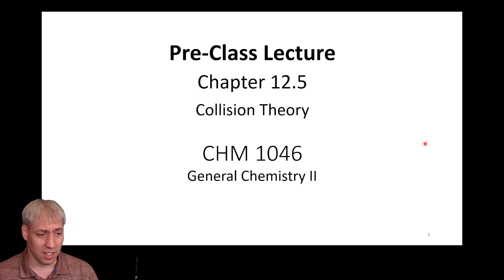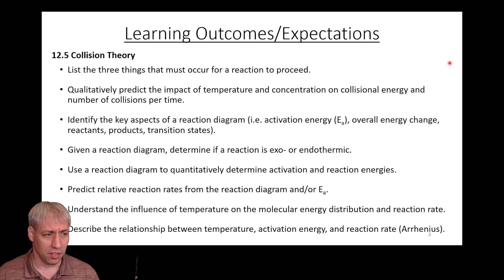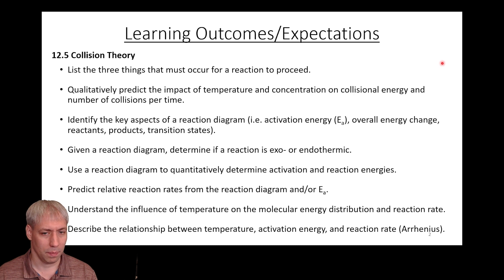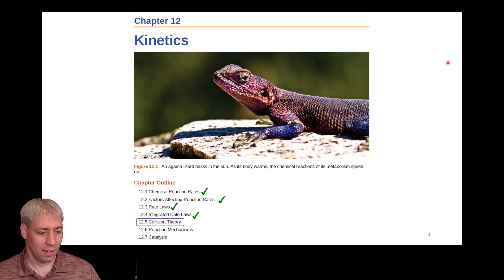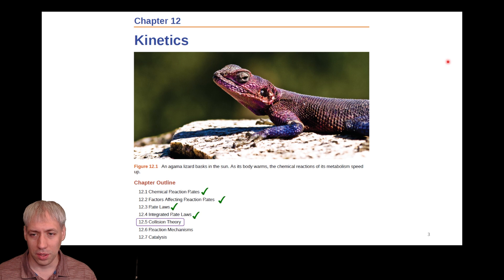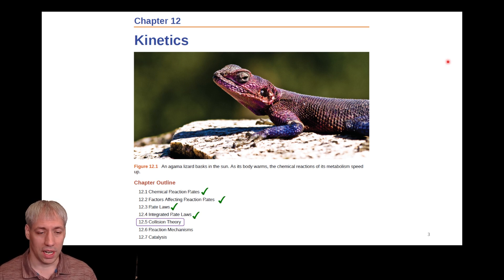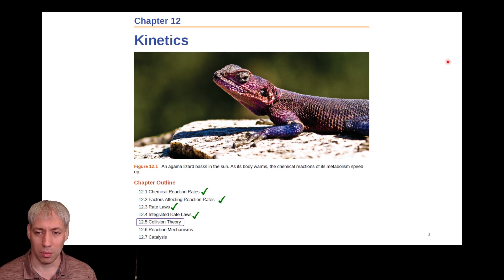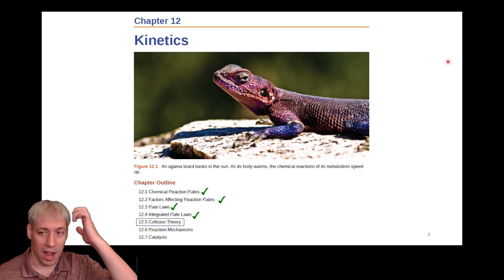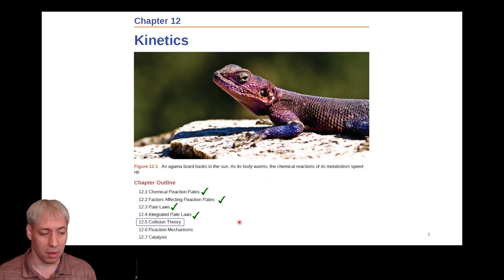Continuing our journey in chemical kinetics, we're going to talk about collision theory. You can see the learning outcomes expectations — feel free to pause and read through these. So far, we've covered reaction rates and factors that influence them, rate laws with their rate constants, and integrated rate laws giving us concentration-time relationships. For the remainder of the chapter, we'll dive into what reaction mechanisms mean — how a reaction happens — starting with section 12.5: collision theory.